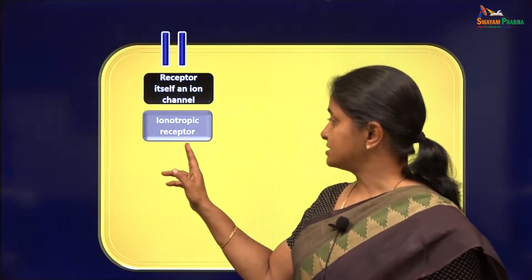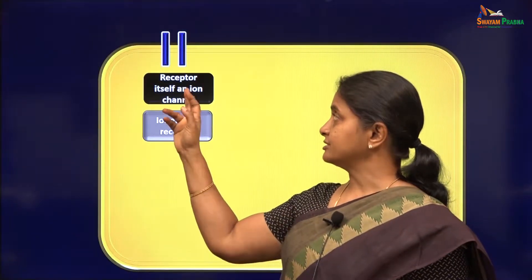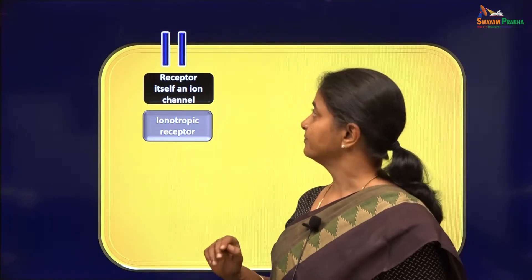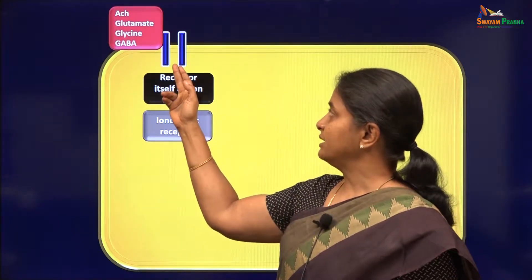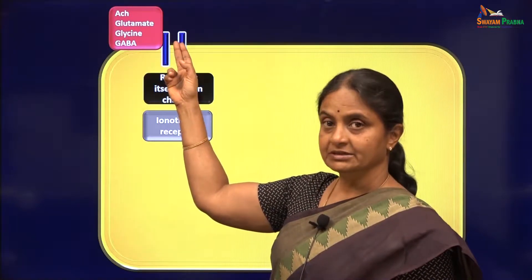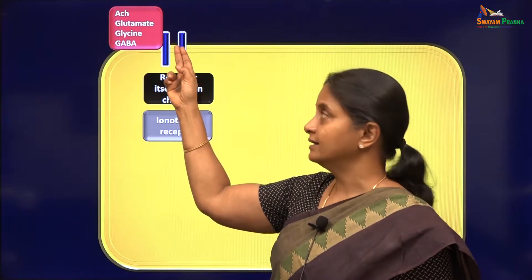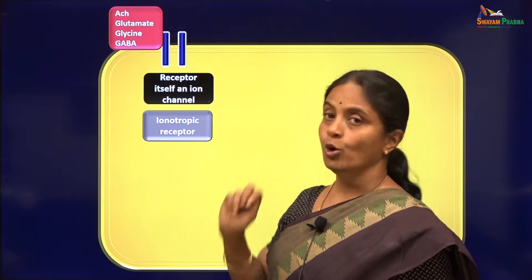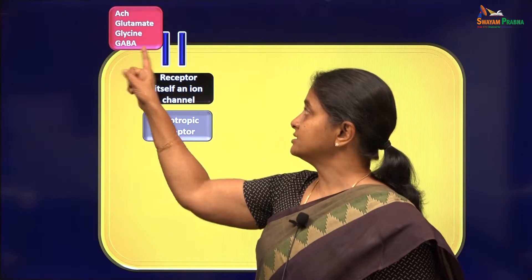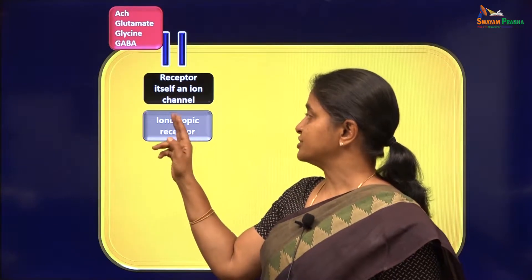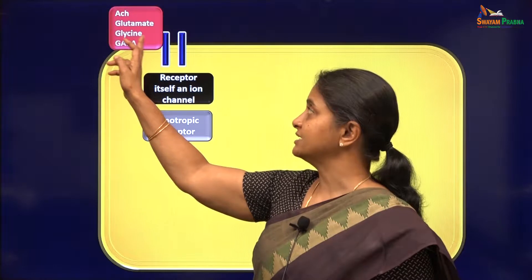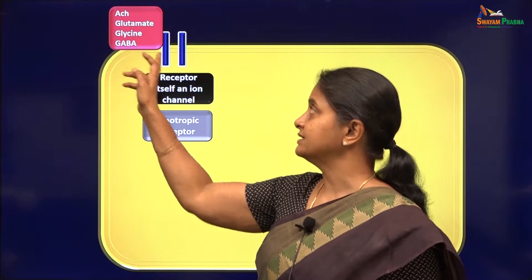Ionotropic receptors are called thus because the receptor itself is an ion channel. The channel would normally be closed, and when the ligand binds to that receptor-channel, the channel will open up. The common ligands which have ionotropic receptors are listed here: acetylcholine, glutamate, glycine, and GABA.